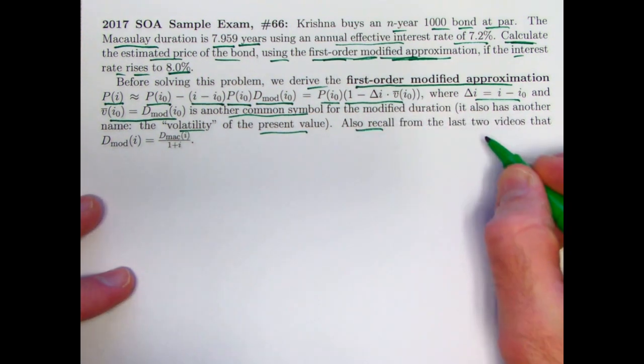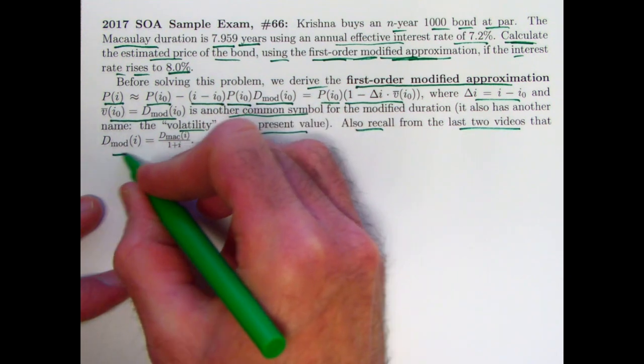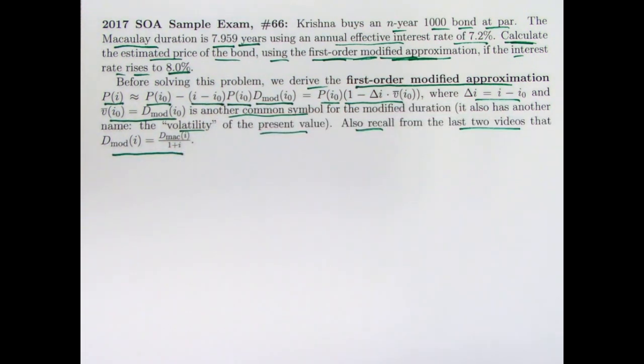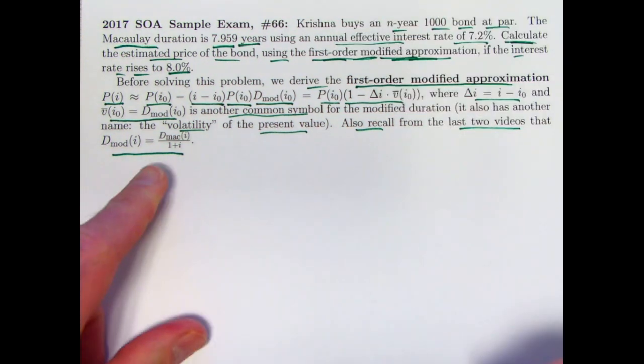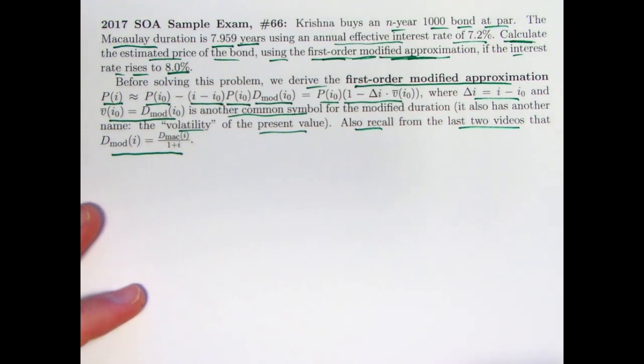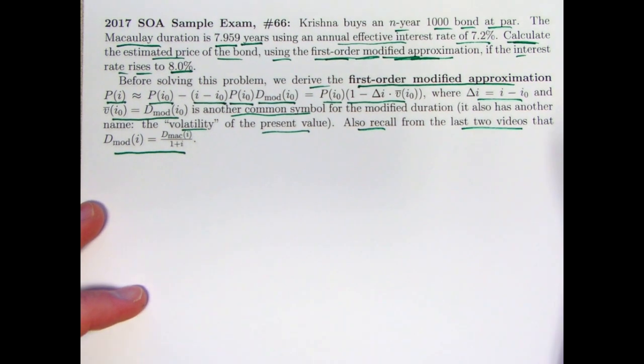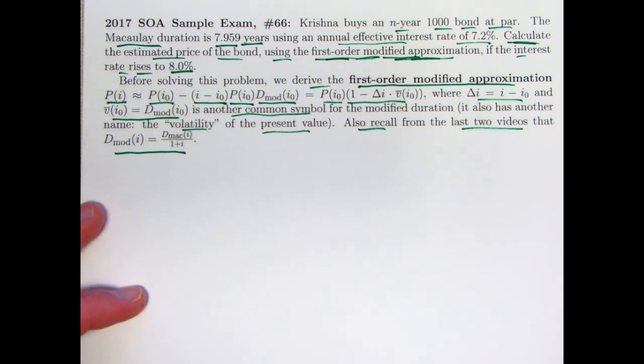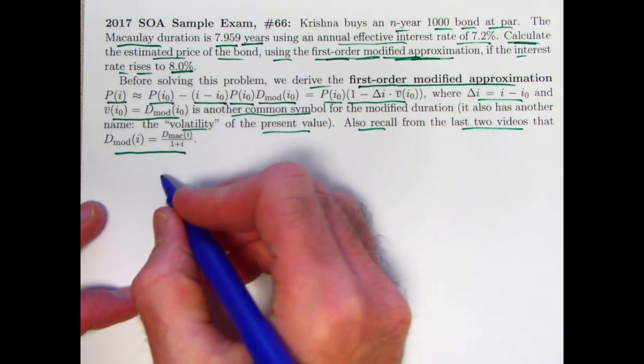We will also need to recall from the last two videos that the modified duration is related to the Macaulay duration. We're given the Macaulay duration, but we need to use the modified duration. So we'll need to use this equation that we saw in the last couple videos to solve for that modified duration. So let's go ahead and derive this first order approximation. It's basically just the linear approximation from calculus involving the derivative, as well as the definition of the modified duration from calculus.